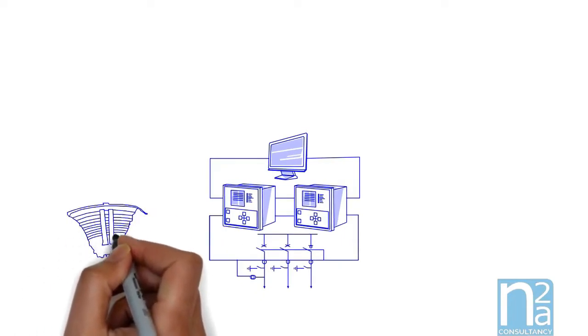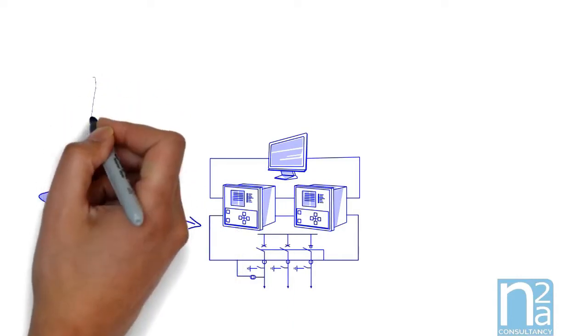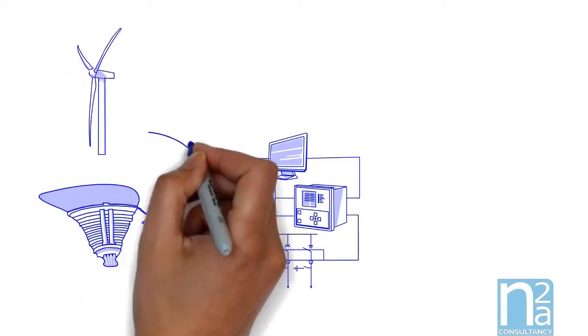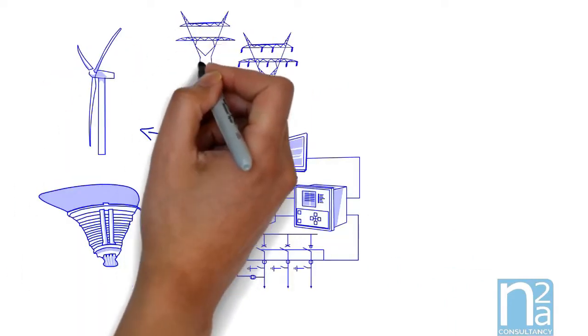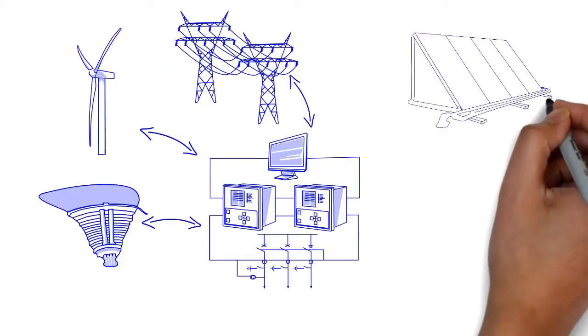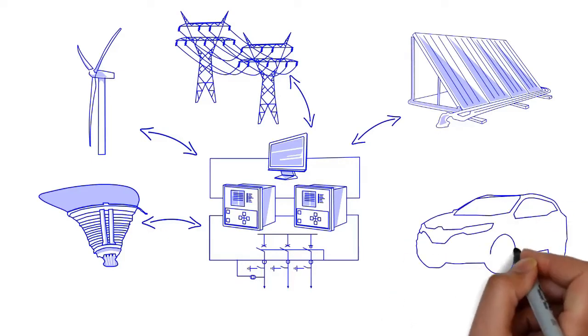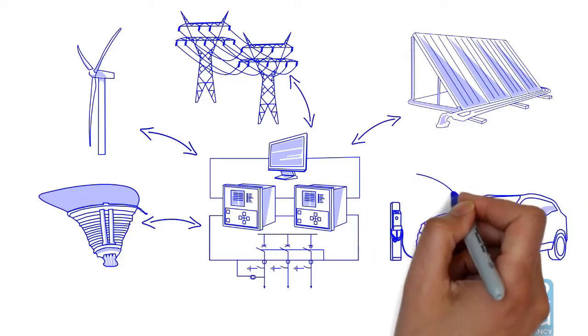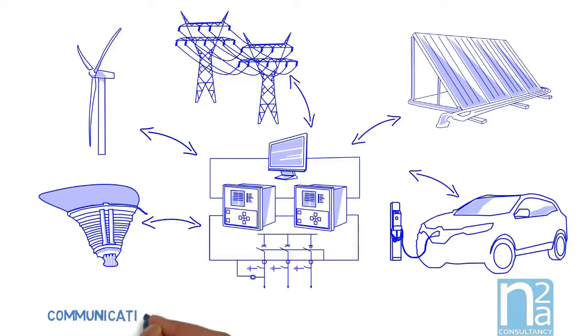It was so successful that quickly it was extended to all network functions and domains, like hydro generation, wind turbine, distribution automation system. Another domain like electrical vehicle charging is under development, and it is now called Communication Network and System for Power Utility Automation, and its scope continuously growing.